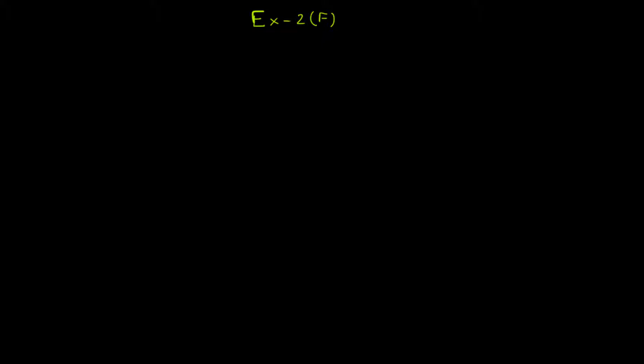Hello students, today we are going to solve exercise 2F from R.A. Sakharwal. The chapter is Polynomials for Grade 9. This exercise is basically based on factorization using a simple rule — the difference of two squares. We have 24 questions in total, planned across two videos. We will be using the formula: a² - b² = (a + b)(a - b).